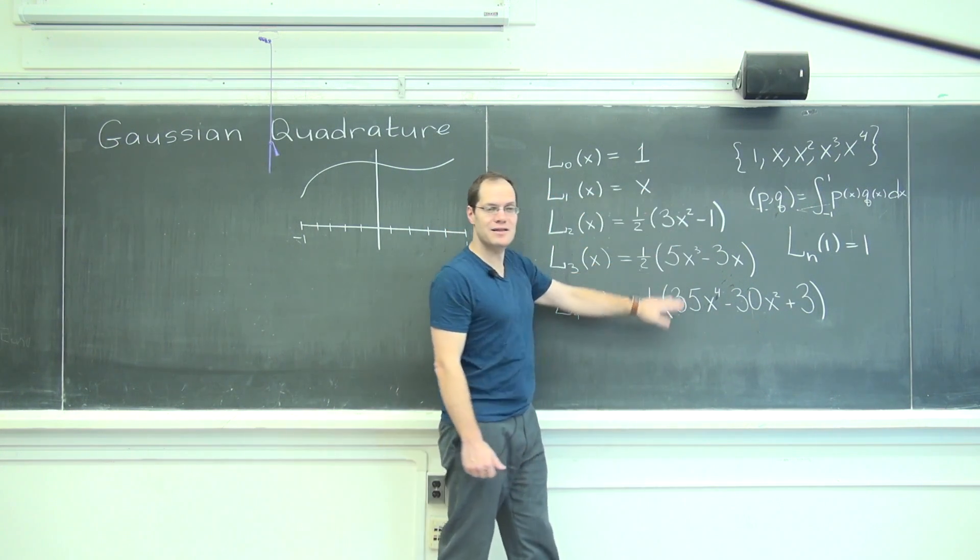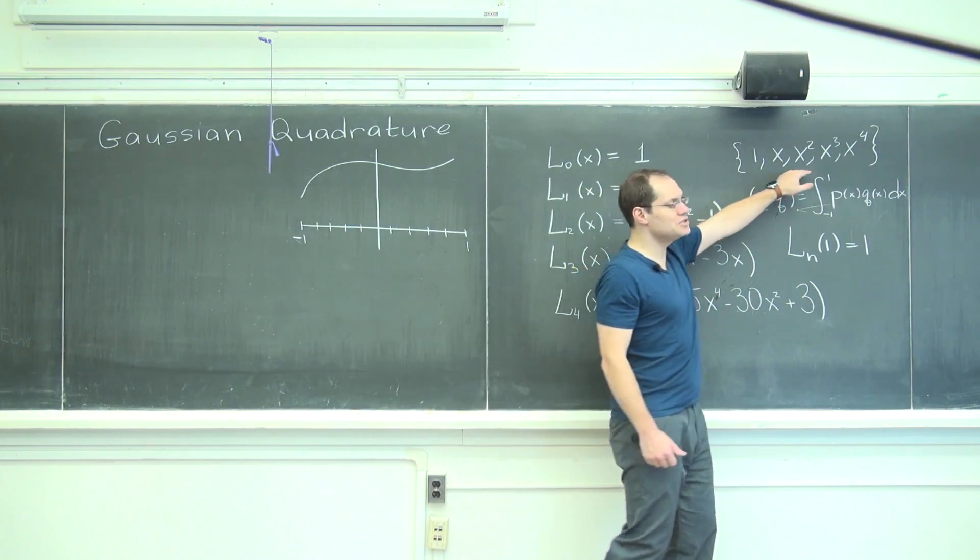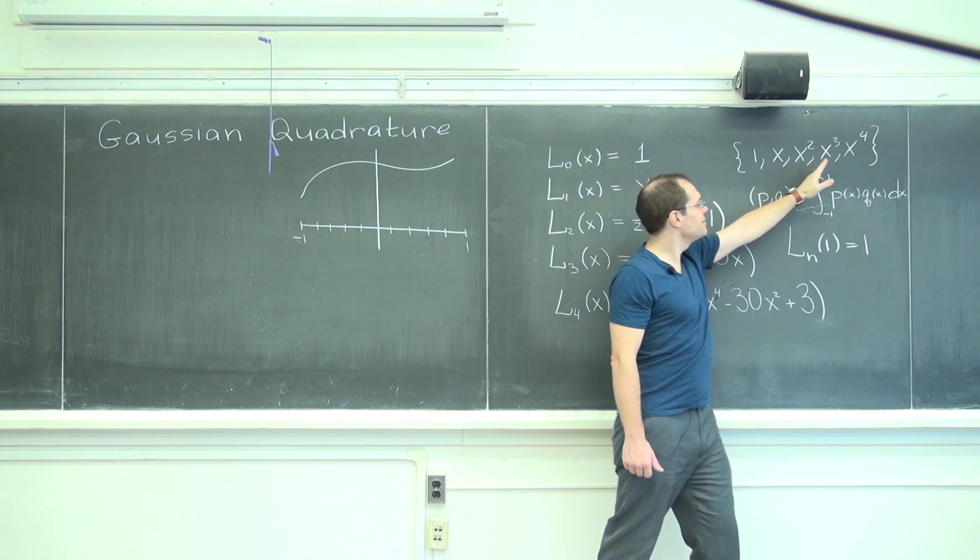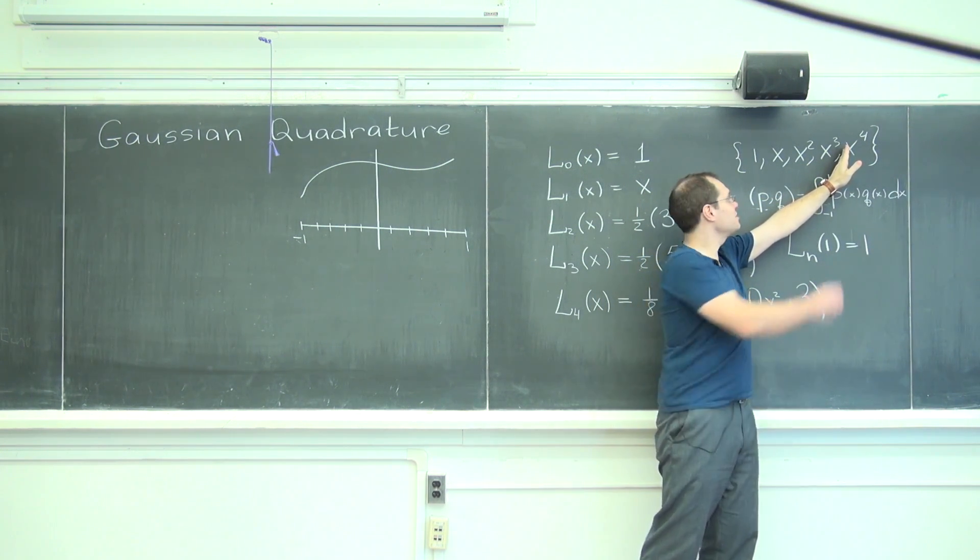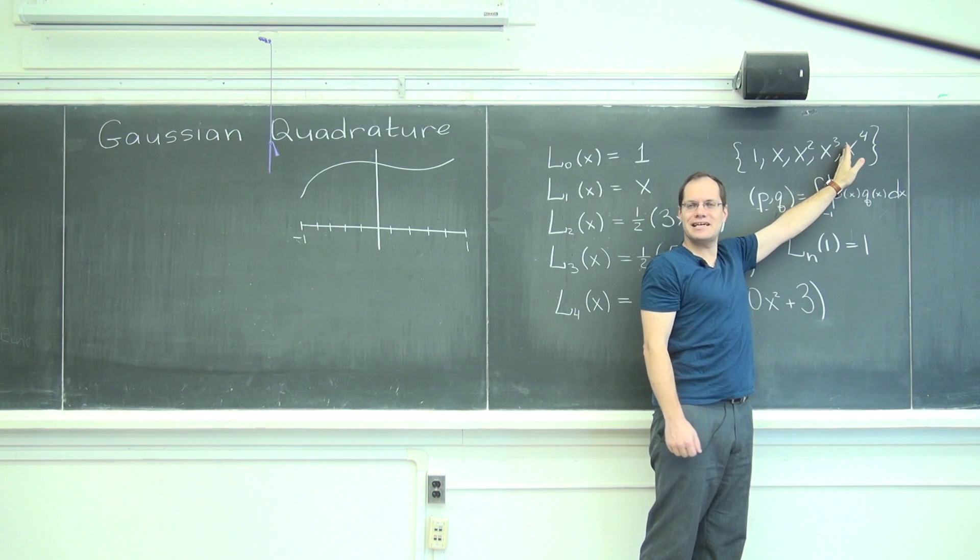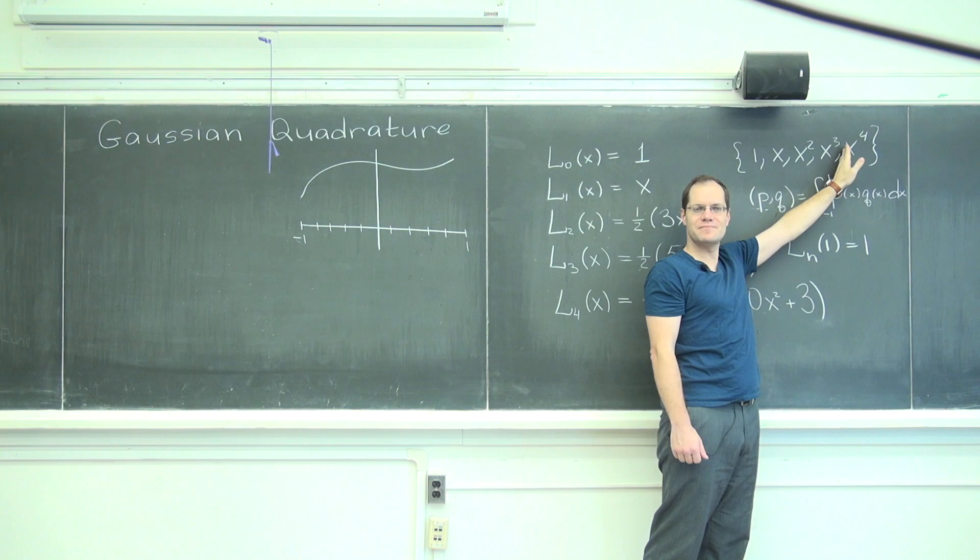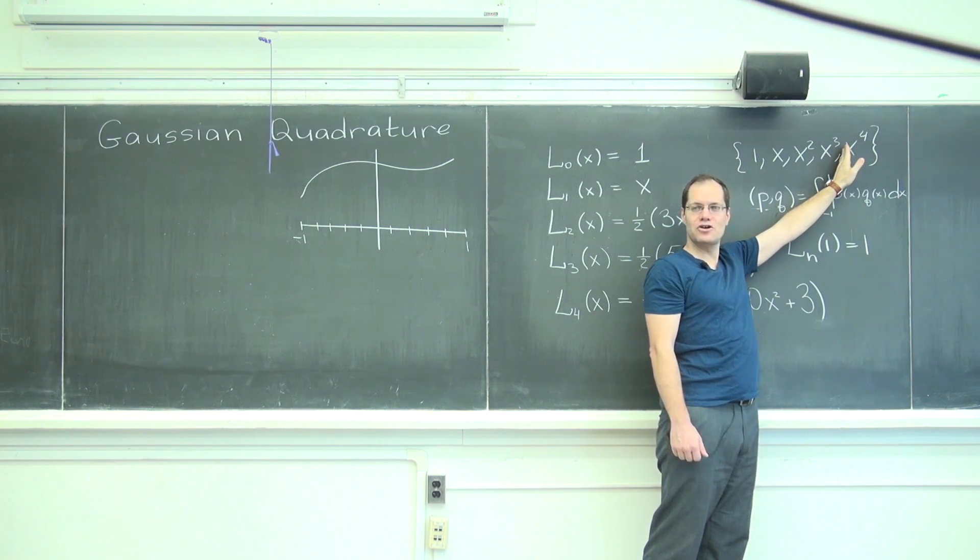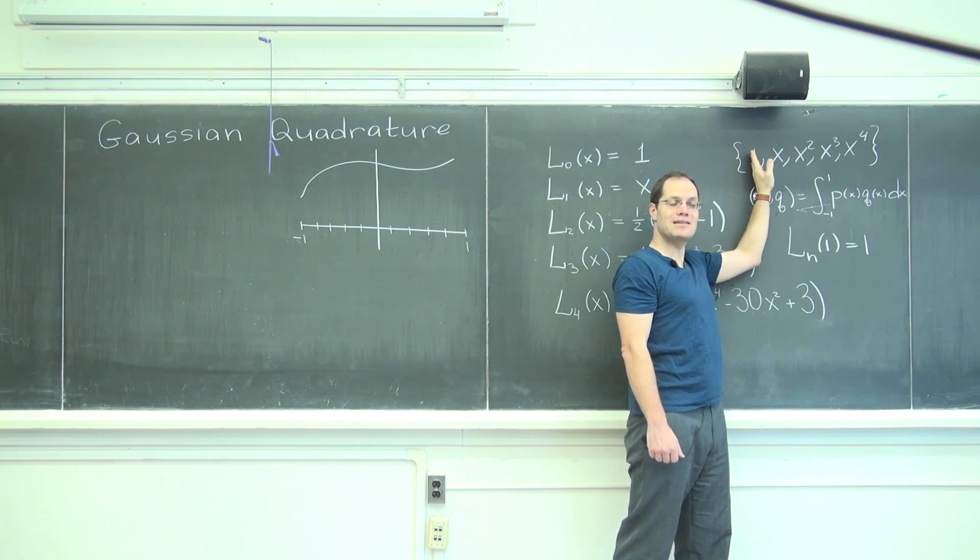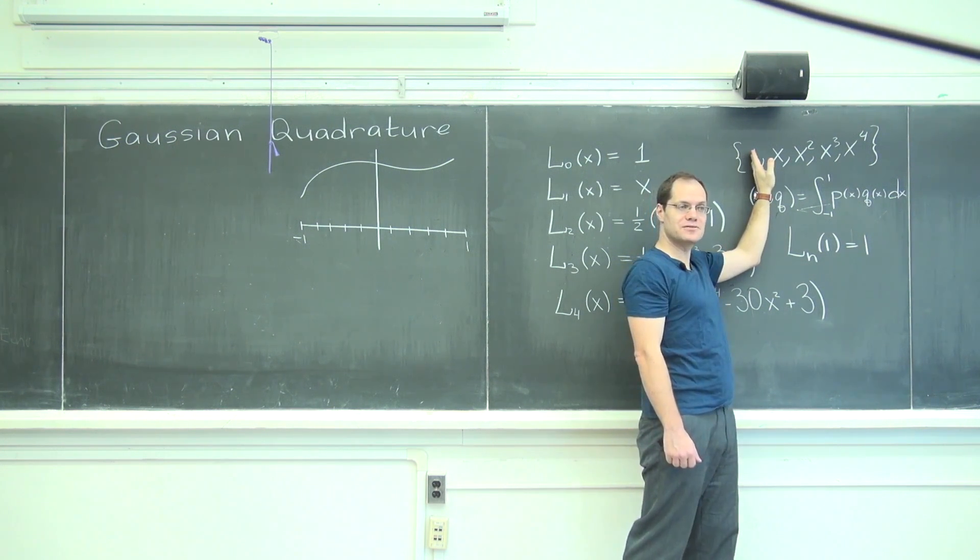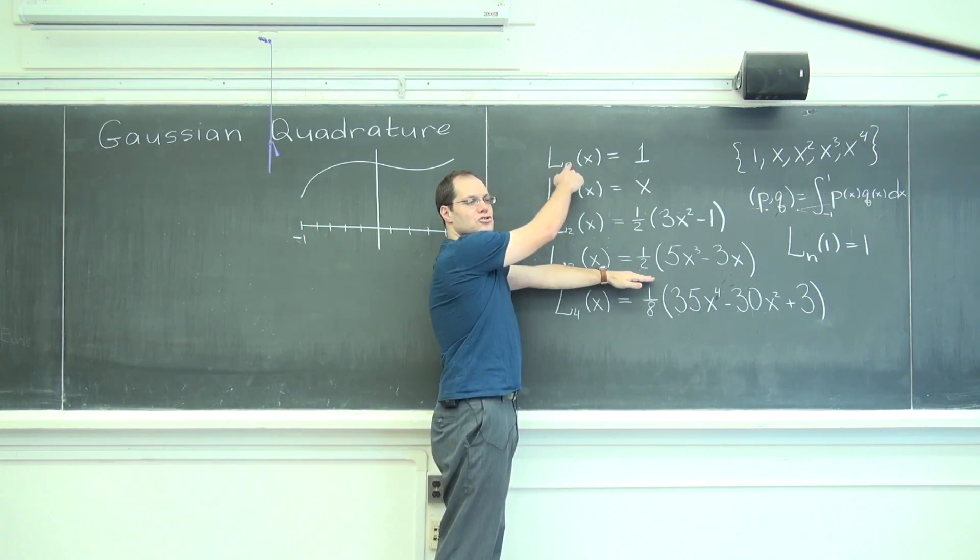Remember that these polynomials came as a result of the Gram-Schmidt procedure applied to these polynomials. Let's take a look at the first four. Because they are what they are, they definitely span the space of all cubic polynomials. If these polynomials span the space of all cubic polynomials, then these do too.